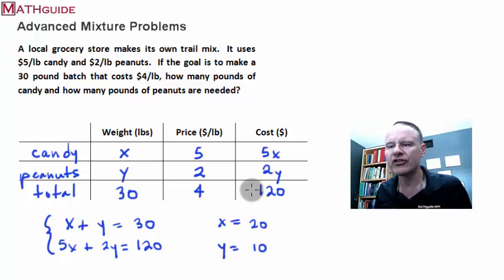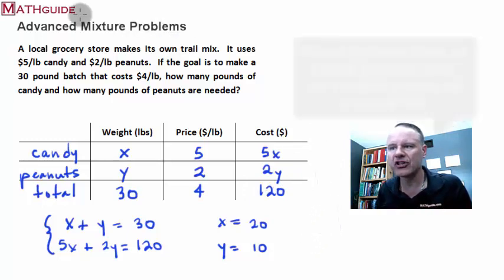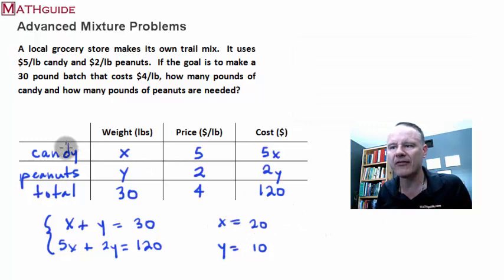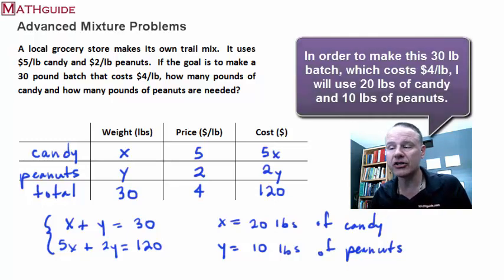Okay, now what does that mean? When you're done with these problems, you really do have to explain what that X and Y values represent. If you start a problem with a word problem, then you really should explain what the answer is in terms of that word problem. Okay, so I know that X stands for the weight of the candy. So I'm going to use 20 pounds of candy. Okay, then I know I'm going to use 10 pounds of peanuts. And that's how I would explain in the end. If I was going to now write a conclusion, I would say, in order to make this 30 pound batch that costs $4 per pound, I'm going to use 20 pounds of candy and, sorry, 10 pounds of peanuts. There you go. There's your solution.